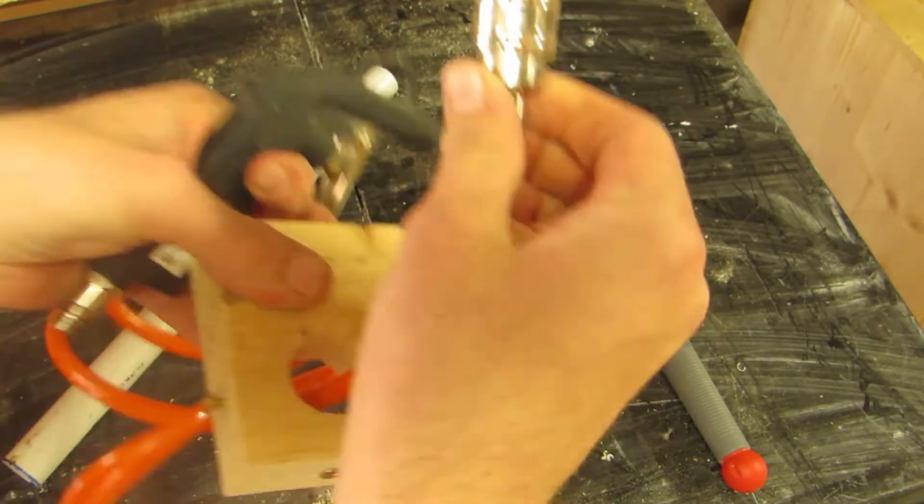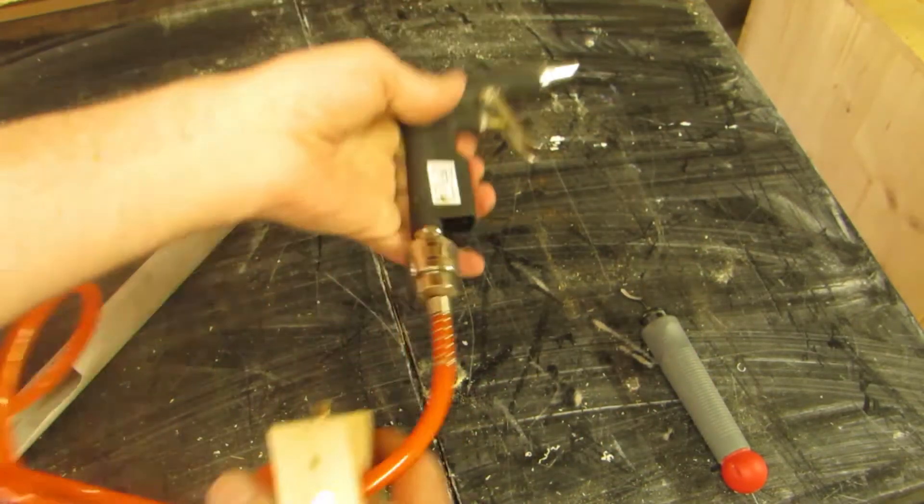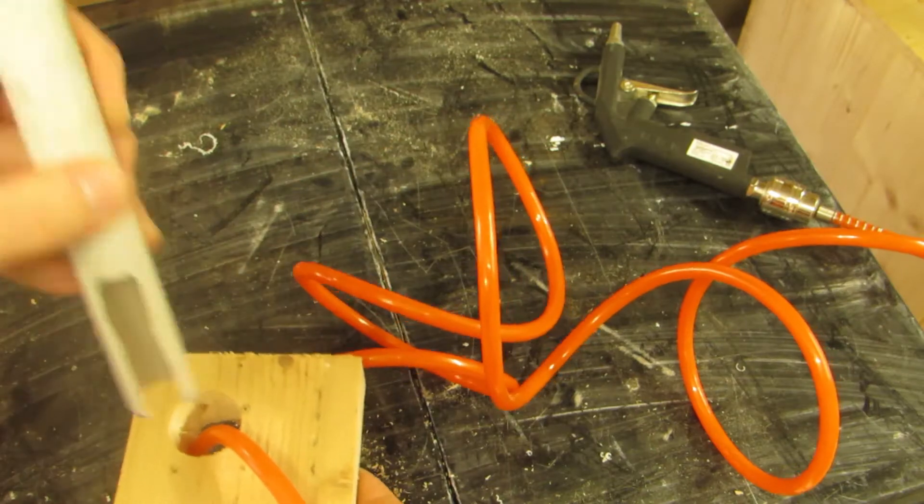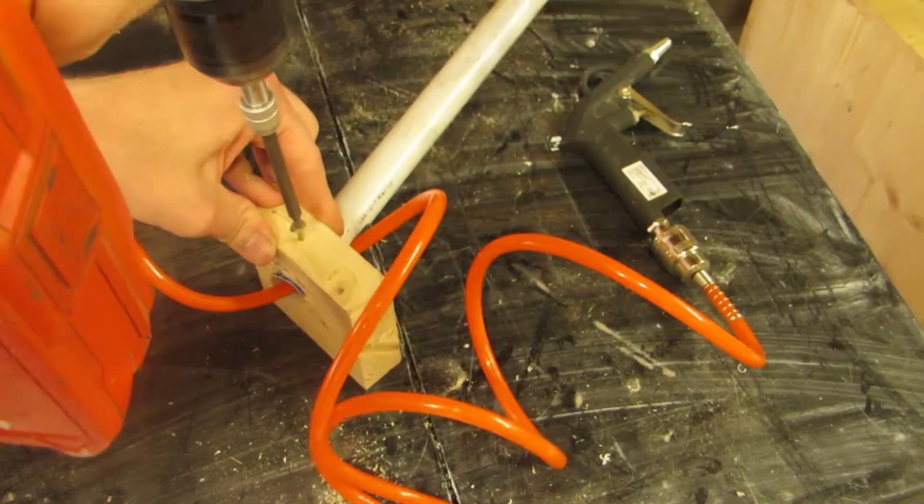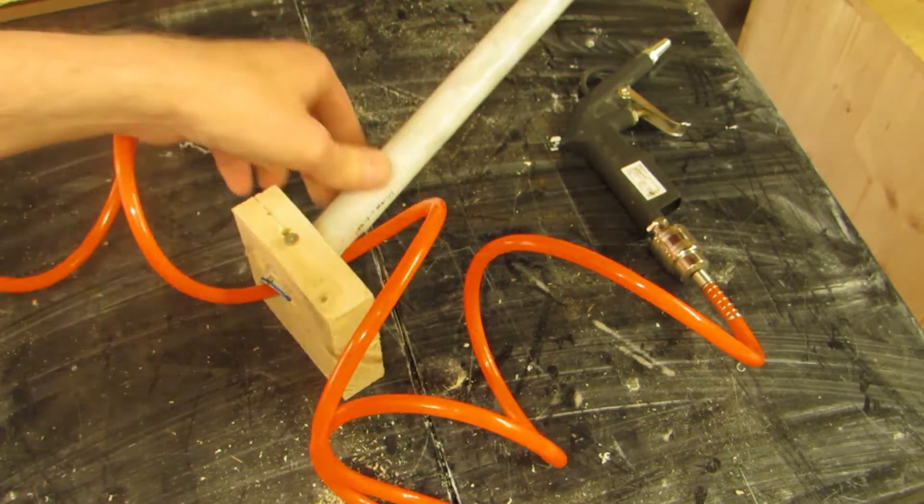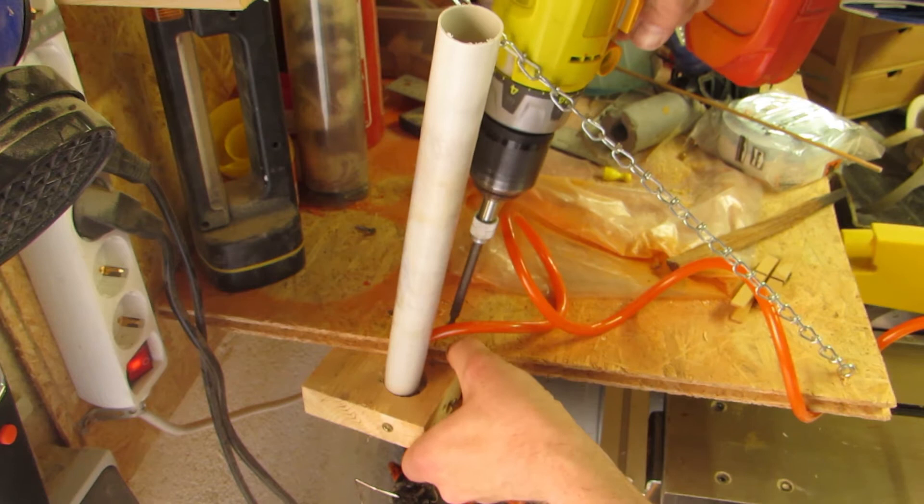Now I thread the hose through the hole in the scrap, put the pipe on top of it so that the hose runs through the slot and screw the pipe haphazardly into place. I do the same for the scrap base which I attach to a workbench.